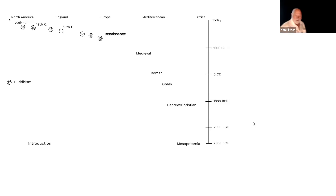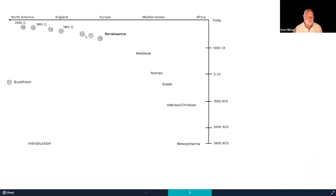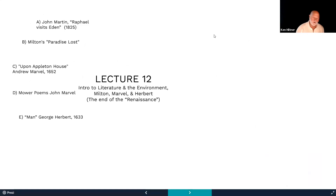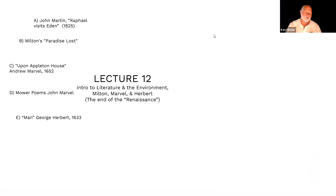We're at lecture 12, getting very close to the end of the course — just four more after this, plus that extra one on Buddhism. We're still in the early modern period, looking at Milton, Marvell, and Herbert. Herbert and 'Upon Appleton House' by Marvell are not in the course reader, so just what's covered in class is sufficient.